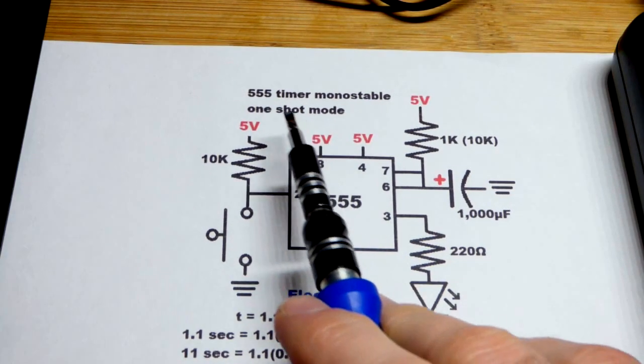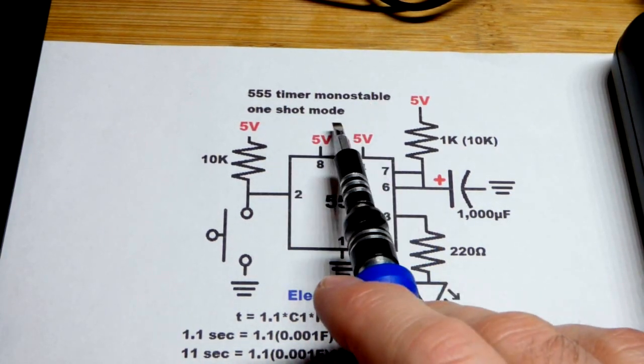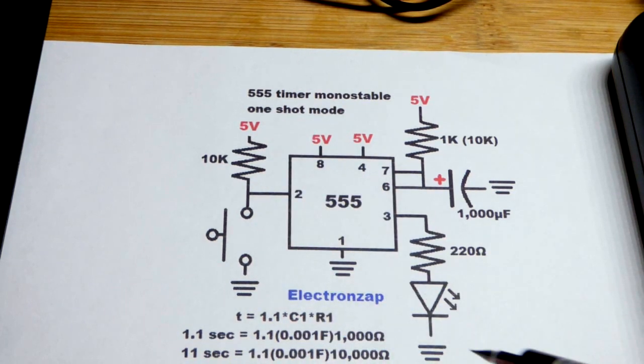So now in this video, we're going to look at the 555 timer in monostable mode. You can also call it a one-shot.